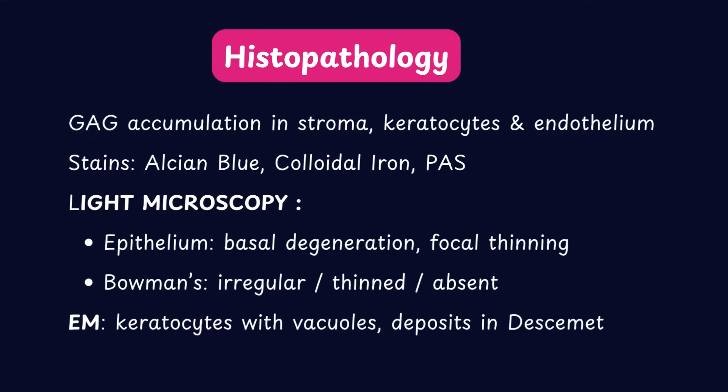Under the light microscope, we can see degeneration of the basal epithelial cells with focal thinning of Bowman's membrane. On electron microscopy, the keratocytes appear swollen and are filled with vacuoles containing the mucopolysaccharide material. Descemet's membrane also shows changes, particularly in its non-banded posterior portion, where granular and vesicular material may be deposited.